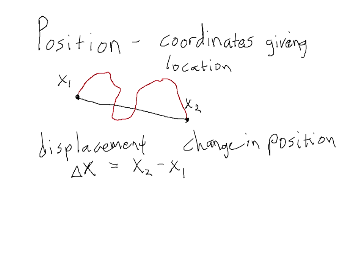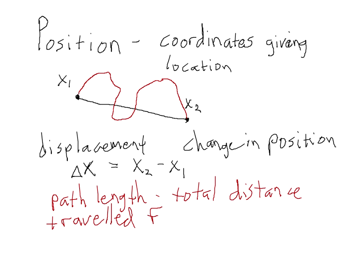So in this case, let's call that the path length. That is the total distance that you traveled as you are going from x1 to x2. In other words, if you went straight there as the crow flies, then your distance and your displacement would be the same. But otherwise, your displacement and your path length would be different.